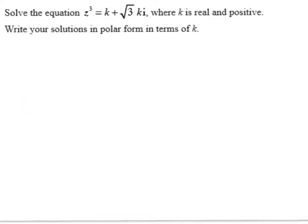Right, the first question is this: Solve the equation z³ = k + √3 ki, where k is real and positive. Write your solutions in polar form in terms of k. So the first thing to do here is always draw a diagram, because sometimes it can be very easy to convert from rectangular form to polar when we've drawn our diagram.